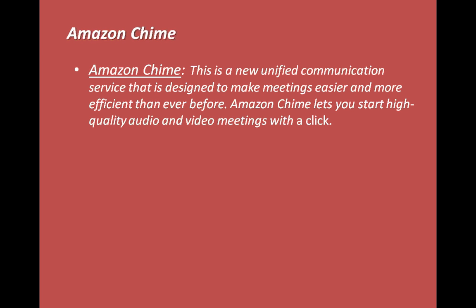Amazon Chime is available through different apps — you can download it from the Google Store and the Apple Store and start using it. Apart from the app, you can go to the link provided by Amazon Chime, enter the meeting ID, and you'll be able to connect to the meetings.